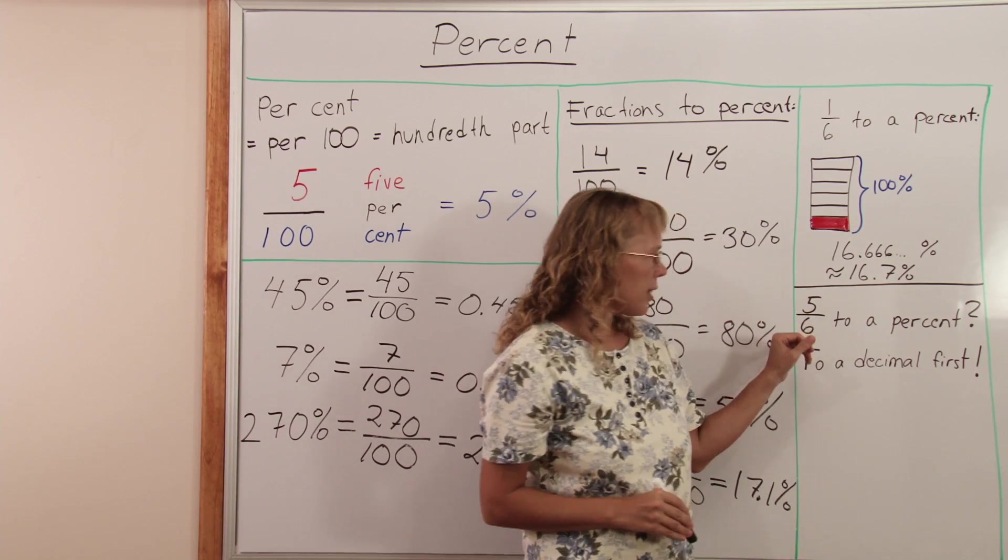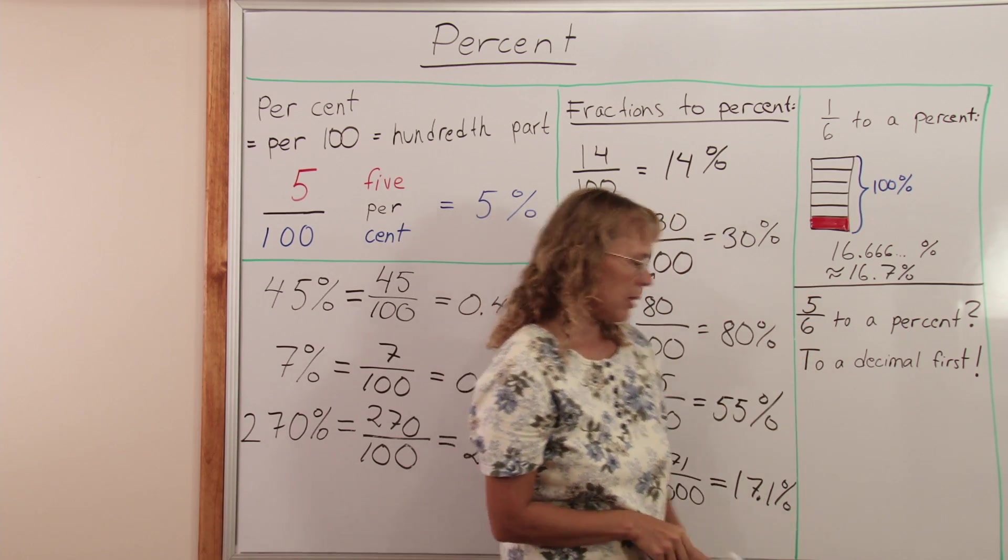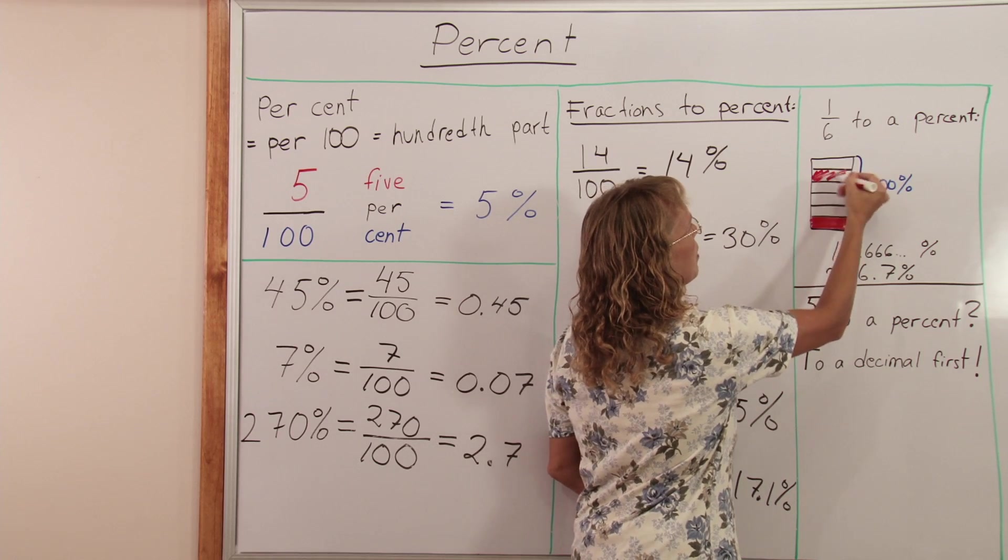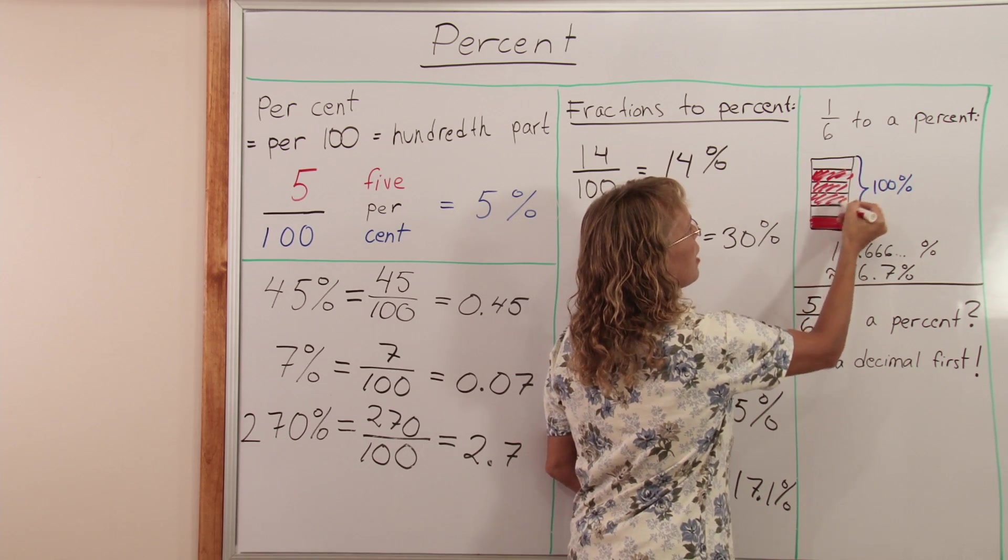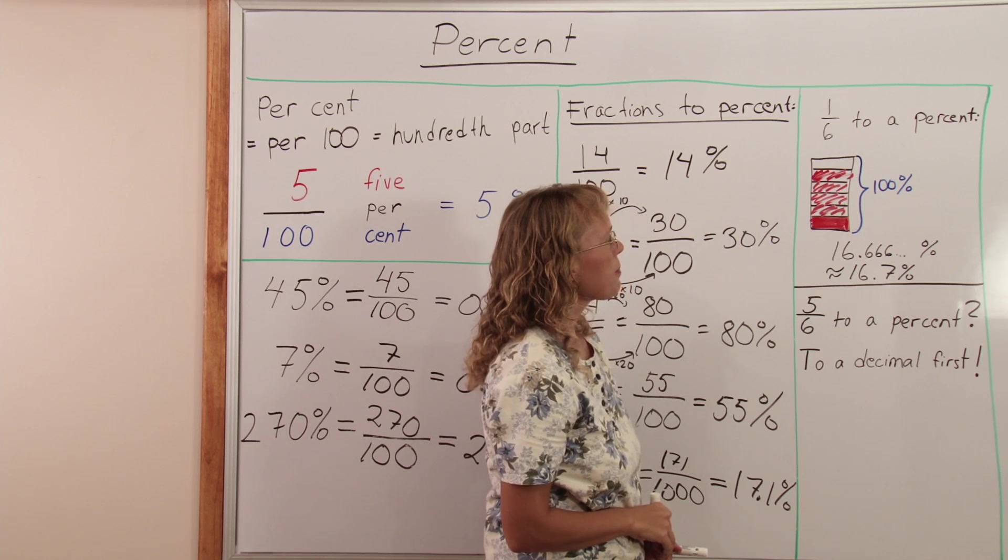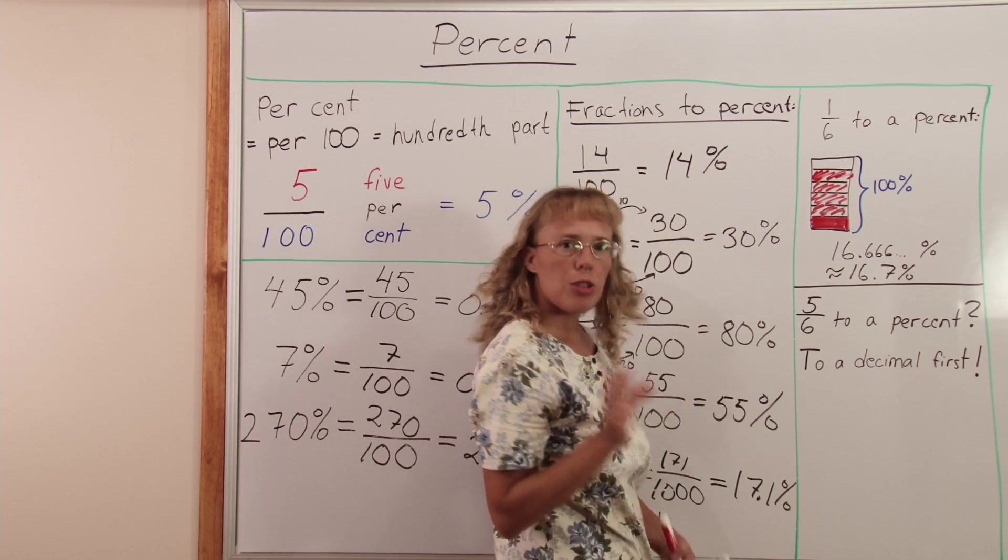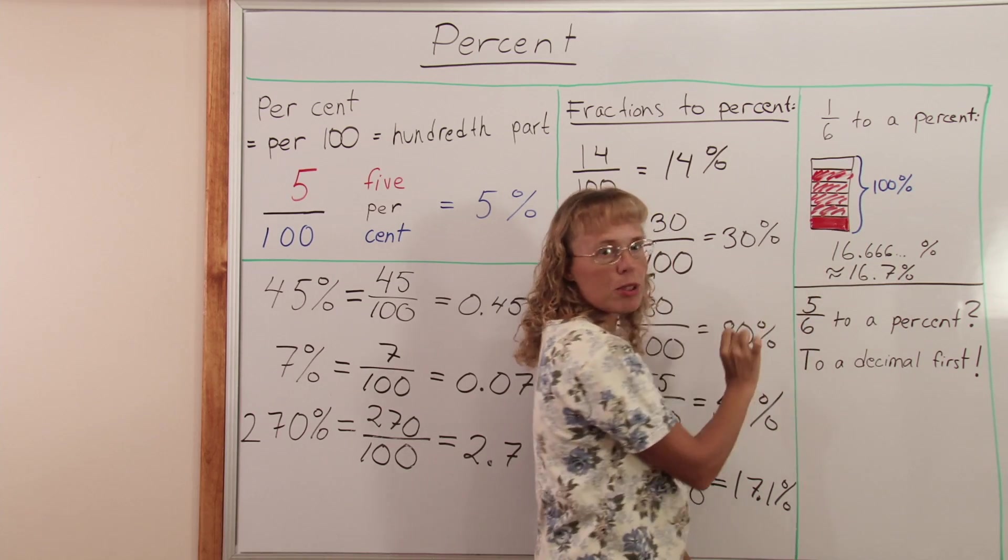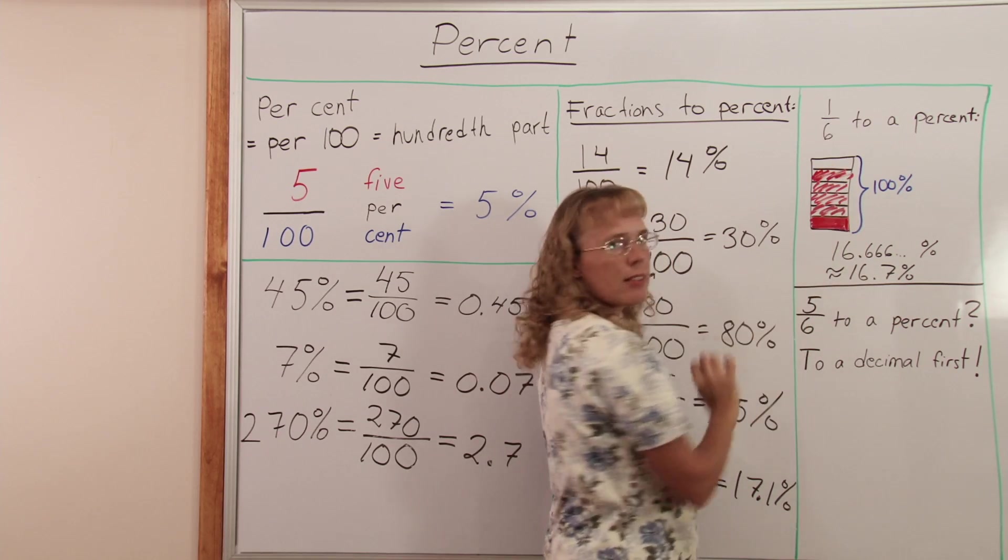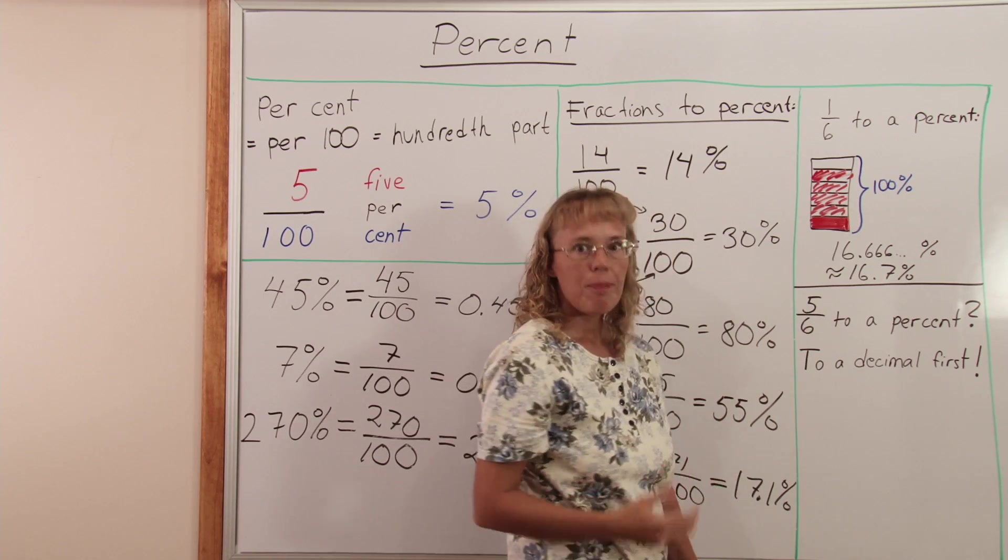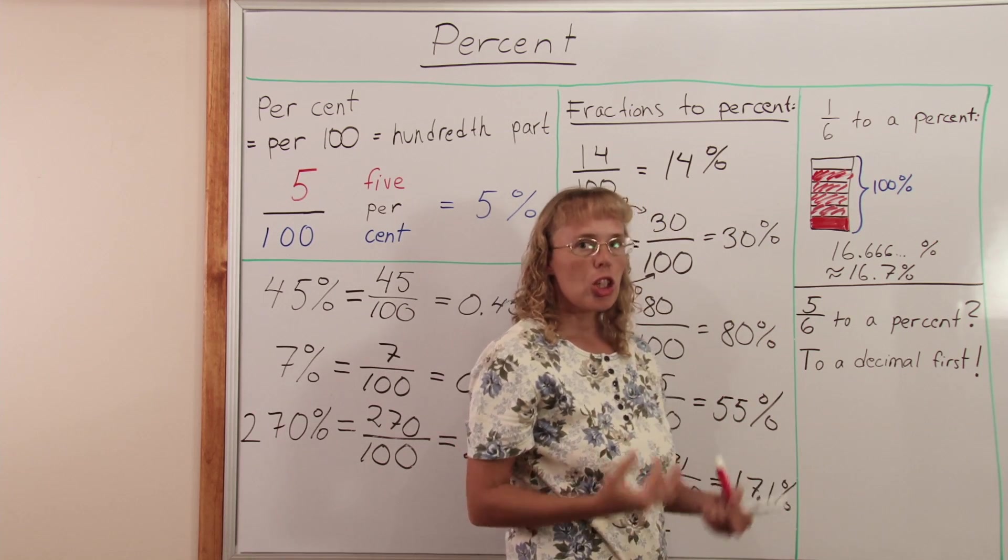And if you have 5 sixths to a percent, if I color this here, I have my 5 sixths, right? How would you change that to a percent? You could take what you already have, your result here. This is the 1 sixth part. It's 16.7 percent. I multiply that by 5. And then you would get your 5 sixths as a percent. But there's a quicker way. It's like a shortcut.